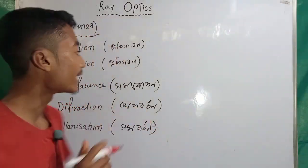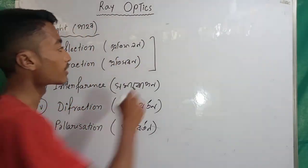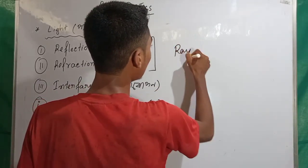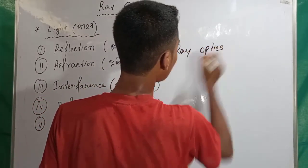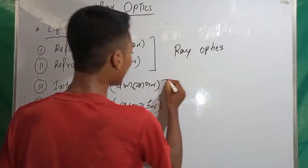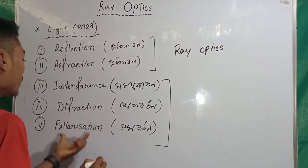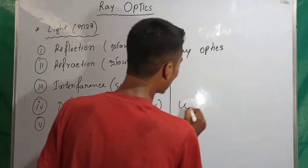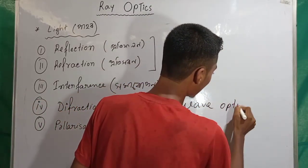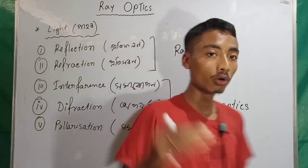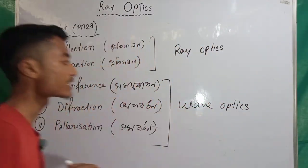The first two topics — reflection and refraction — come under ray optics (rosmi biggan). Interference, diffraction, and polarization come under wave optics. Is that clear? Wave optics.